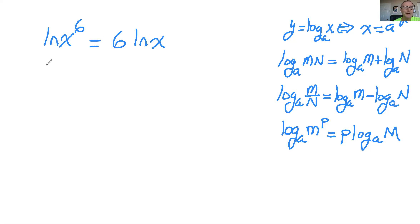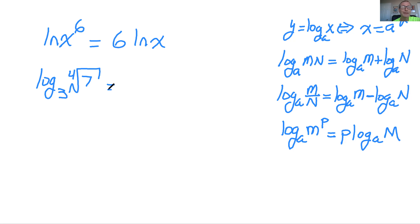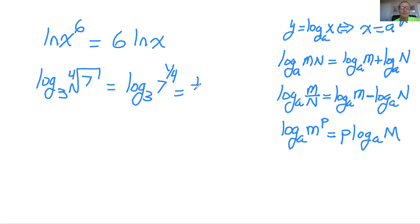This one's a little trickier. Say you had log base 3, and the book writes it as the fourth root of 7. Remember, you rewrite that as 7 to the one-fourth power — you'll need to do that for calculus for sure. So the p value here is one-fourth, and you rewrite it as one-fourth times log base 3 of 7.